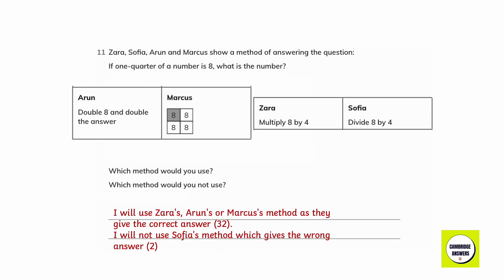Explain your answer. I will use Zara's, Arun's or Marcus's method as they give the correct answer, which is 32. I will not use Sophia's method, which gives the wrong answer, 2.